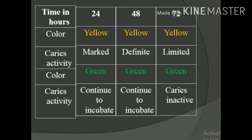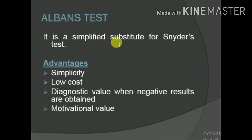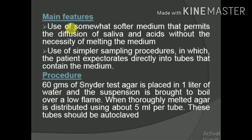The next is Alban's test, a simplified substitute for Snyder's test. Its advantages are simplicity, low cost, diagnostic value when negative results are obtained, and motivational value. It uses a softer medium that permits diffusion of saliva and acids without needing to melt the medium. The patient expectorates directly into tubes containing the medium, making sampling simpler.